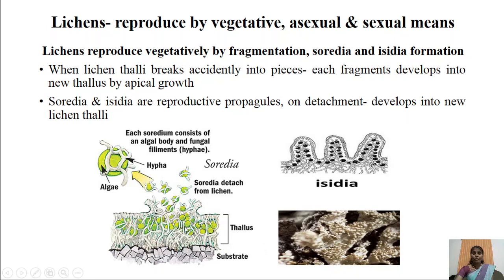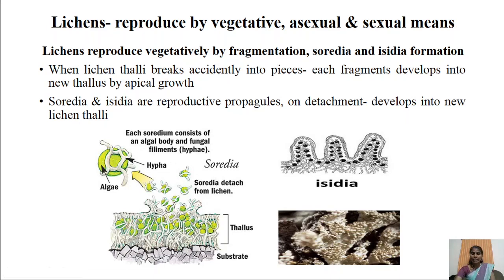When soredia are formed in large numbers, pressure is created on the upper surface so that the upper cortical zone breaks open and releases a mass of grayish-green colored spores called soredia. When the wind blows, they are carried away to different places. When they fall on a suitable substratum, each soredium develops into a new individual lichen thallus.